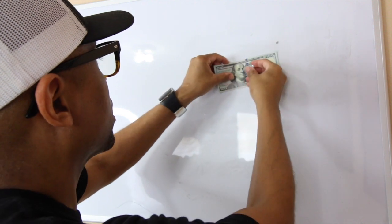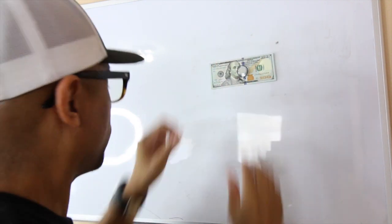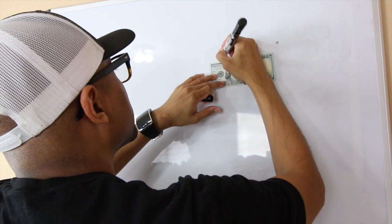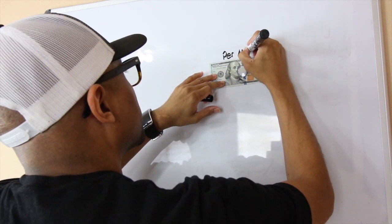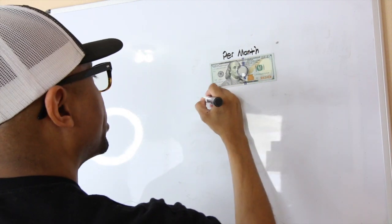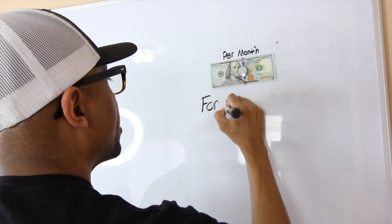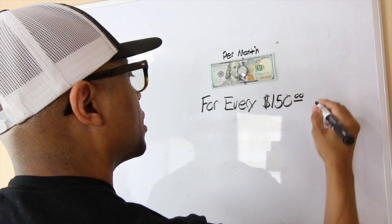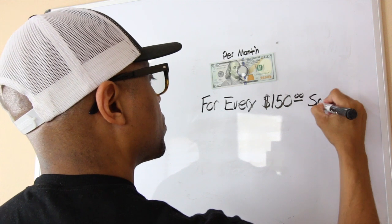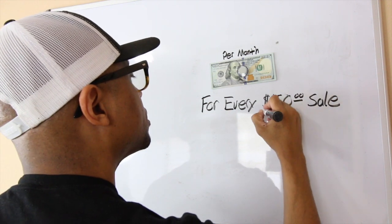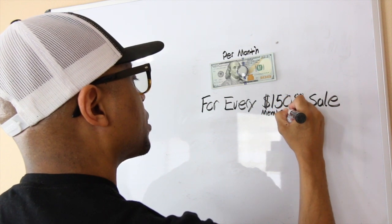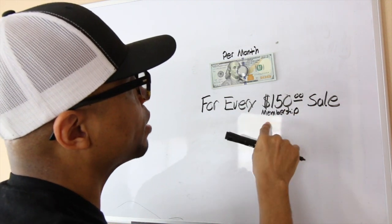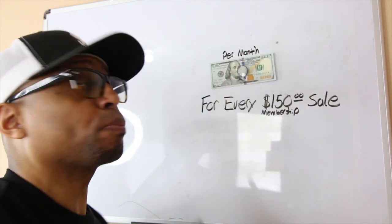I'm going to take this $100 bill and write on the whiteboard: $100 per month for every $150 sale — which is basically a monthly membership. So every time you sell a $150 monthly membership, you're going to earn $100 per month per member.